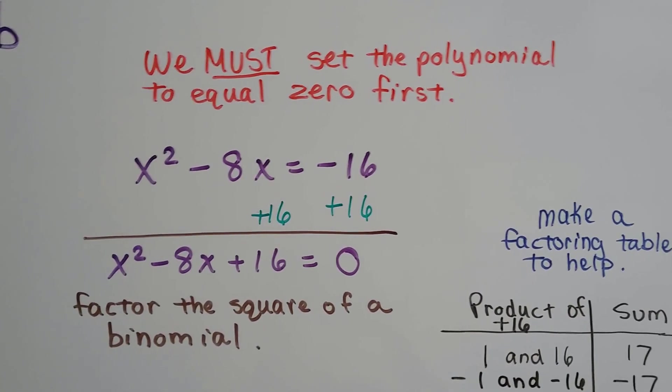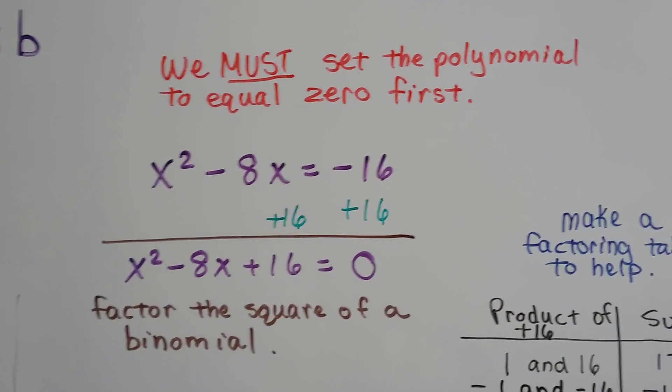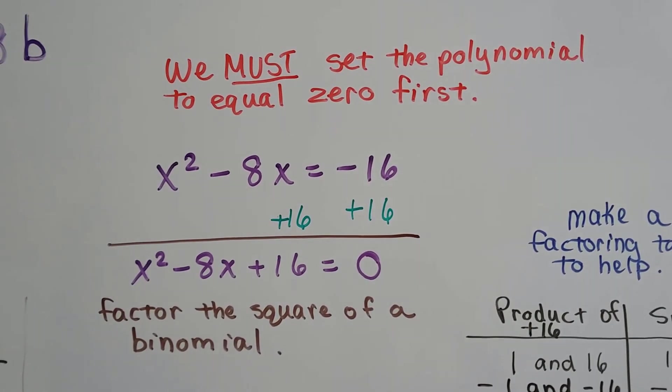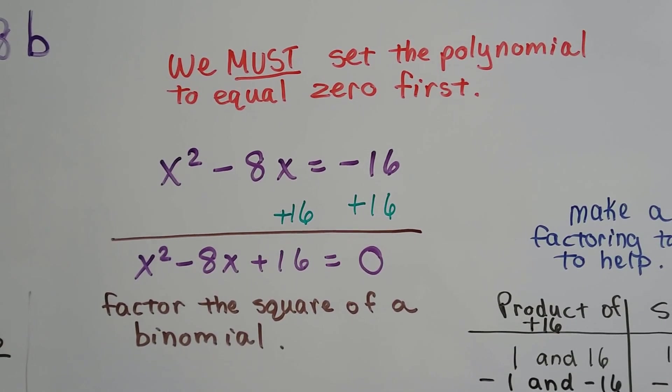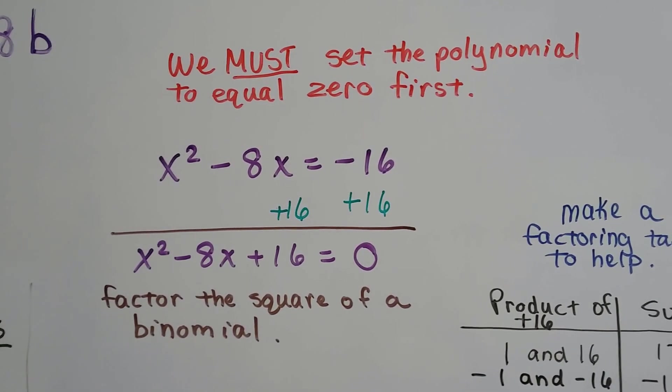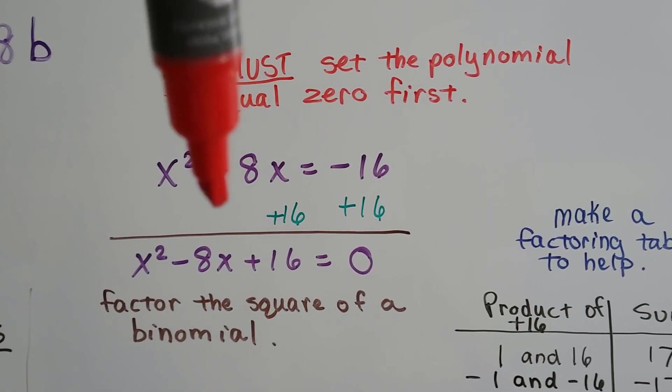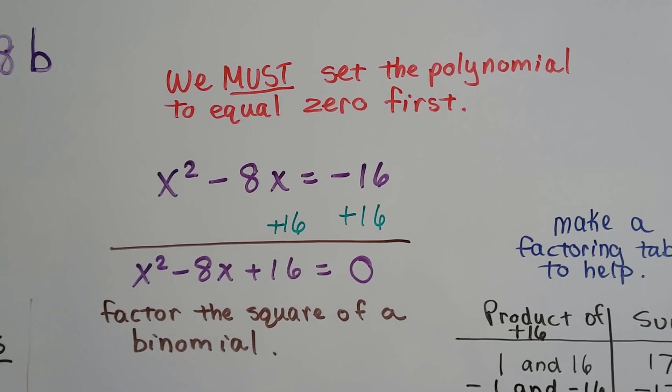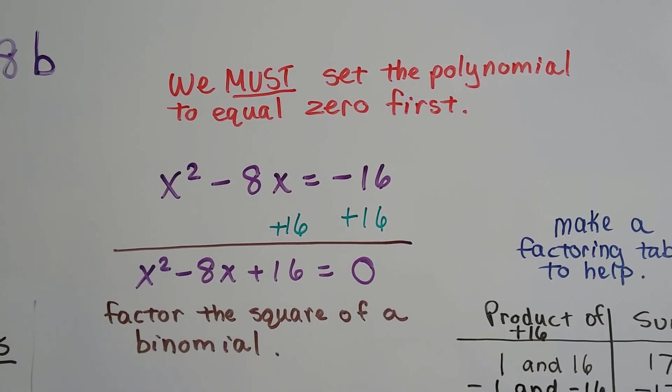So if we have x squared minus 8x equals negative 16, we can use the properties of equality to add 16 to each side. To get that negative 16 out of there, we want a zero in its place.